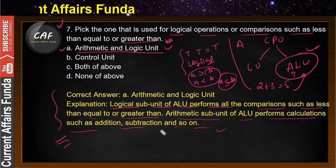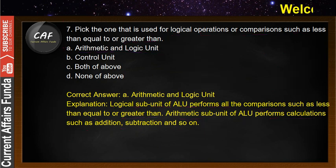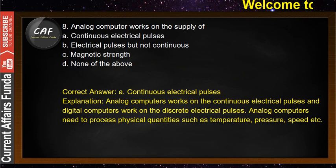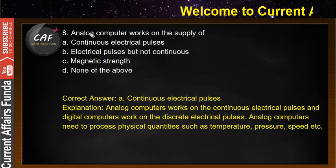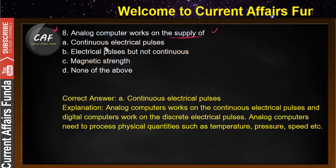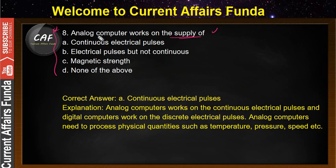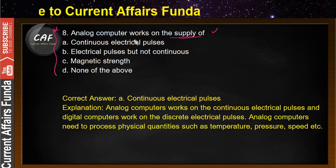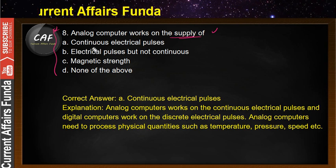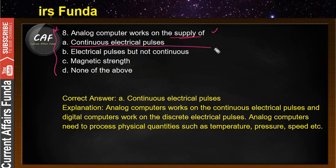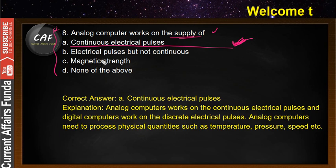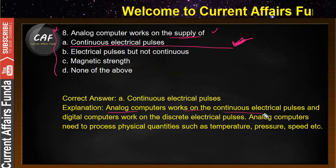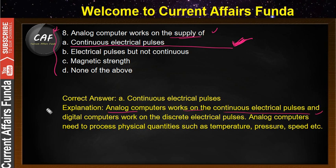Problem number 8: analog computers work on the supply of what? The answer is continuous electrical pulse. If you have read the theory of analog computers, you should know this. Analog computers work on continuous electrical pulses, while digital computers work on discrete electrical pulses. Analog computers process physical quantities such as temperature, pressure, and speed.